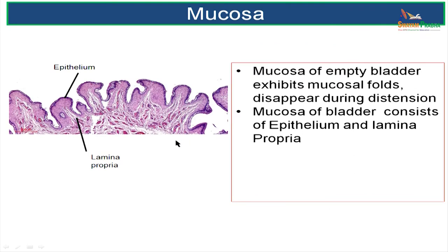Now we will take up the mucosa of urinary bladder. Mucosa consists of epithelium and lamina propria. The epithelium is transitional epithelium. Please understand that the mucosa of an empty bladder exhibits mucosal folds similar to what we have learnt in ureter.